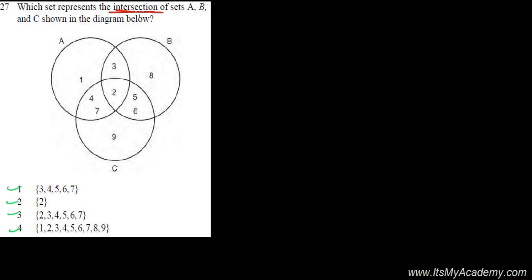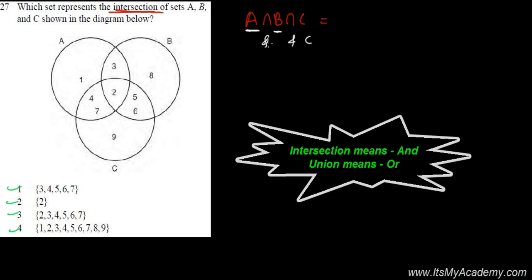First, intersection means you need to understand, let me show here, A intersection B intersection C. What does it mean? That certain element is found in A, and in B, and in C. Intersection means and, keep in mind, union means or.